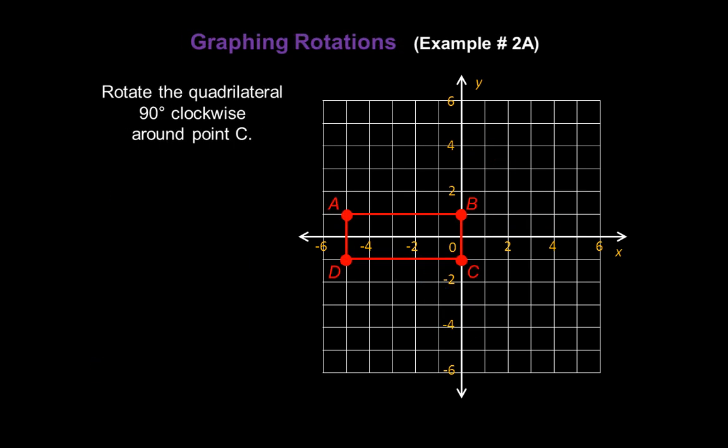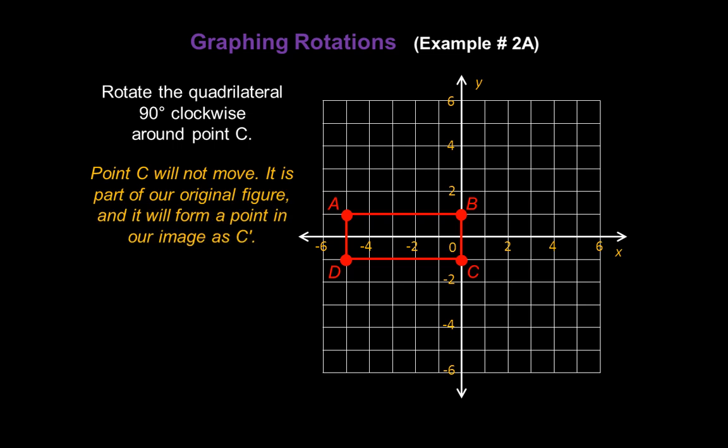Now let's graph a rotation. Let's rotate this quadrilateral 90 degrees clockwise around point C. That means point C is not going to move — it's part of our original figure, and it's going to form a point in our image as C prime. So let's go ahead and add C prime to our graph right now.